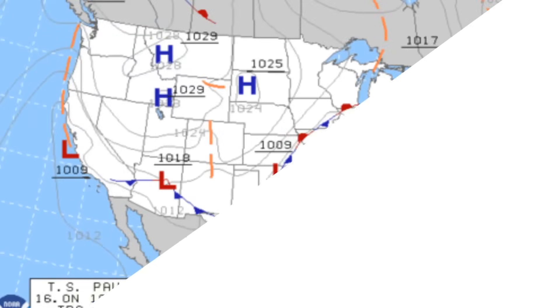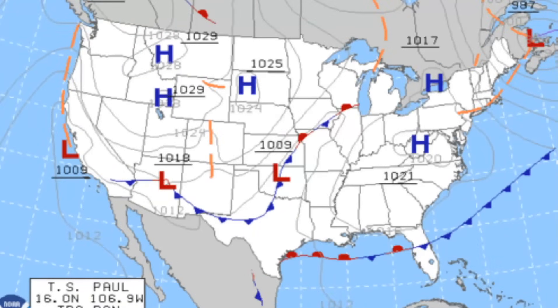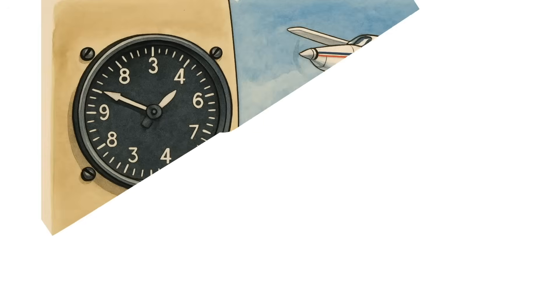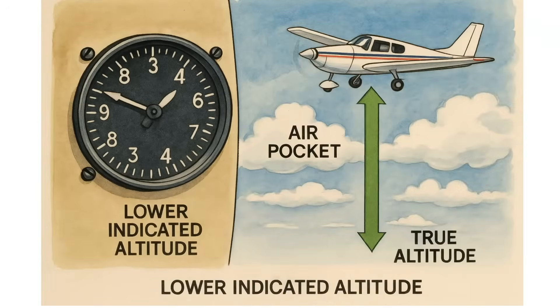Next, I want to discuss altimeter errors. And contrary to what you might think, the altimeter is not perfect. Our atmosphere is full of areas with different air pressure — I like to call these air pockets. And not only are there pockets of different air pressure, but there are also pockets of different air temperature as well. And these pockets can actually affect your altimeter quite a bit. Some of it can't be helped, and temperature is one of those things.